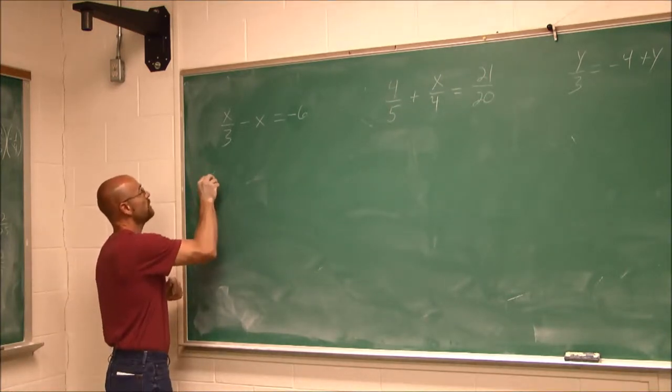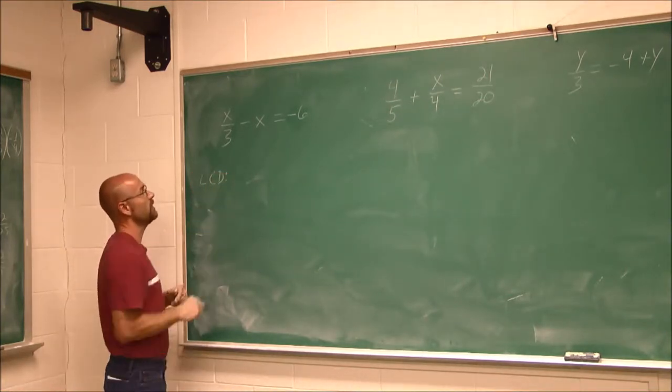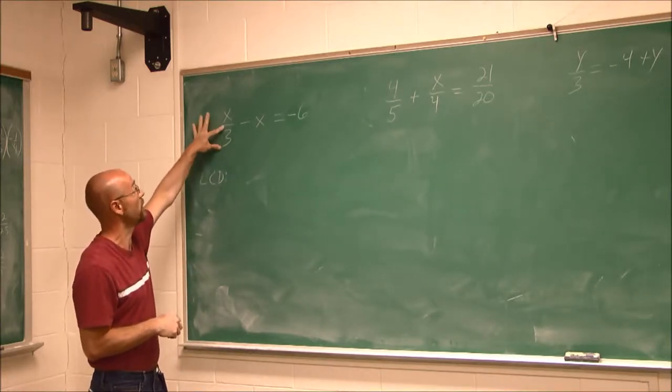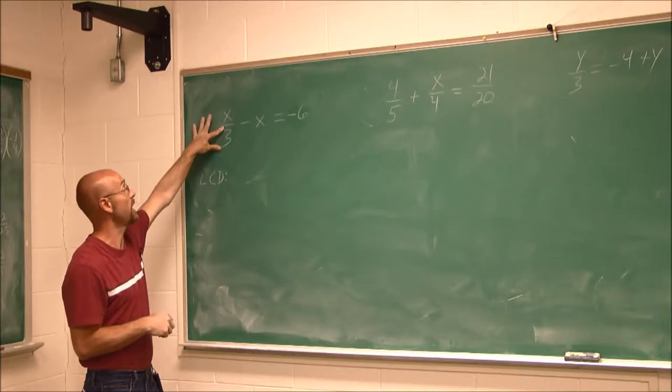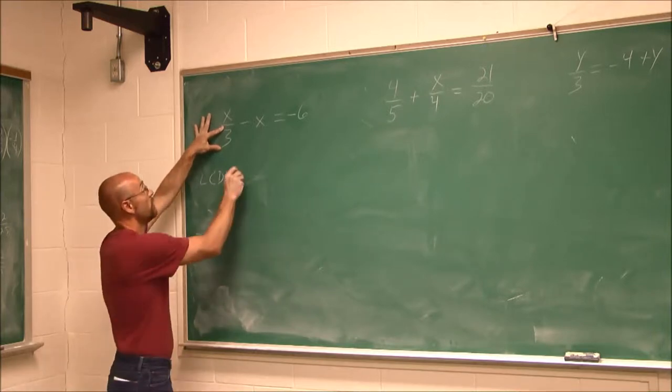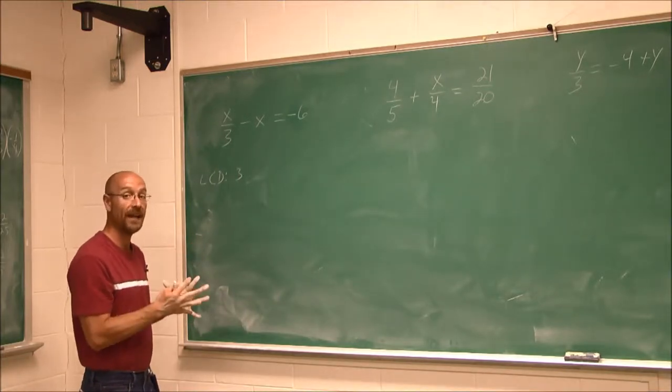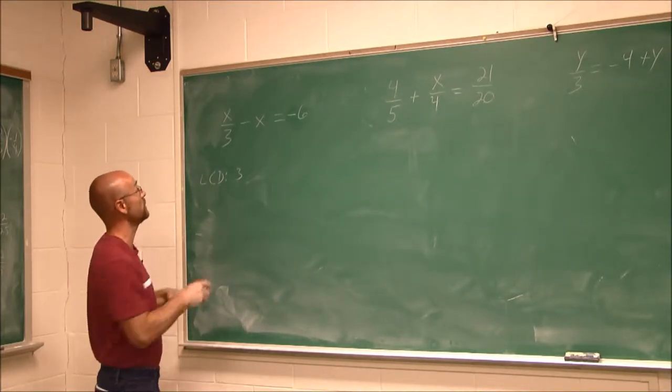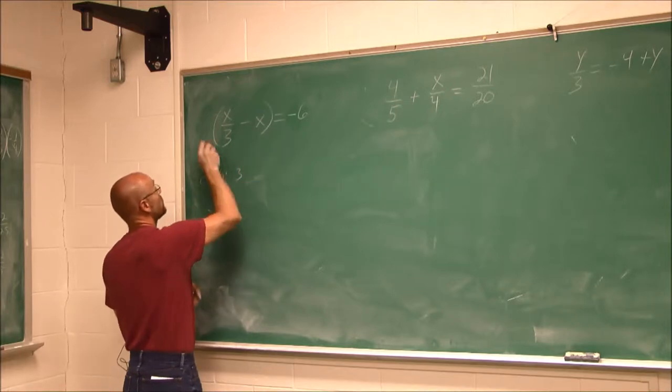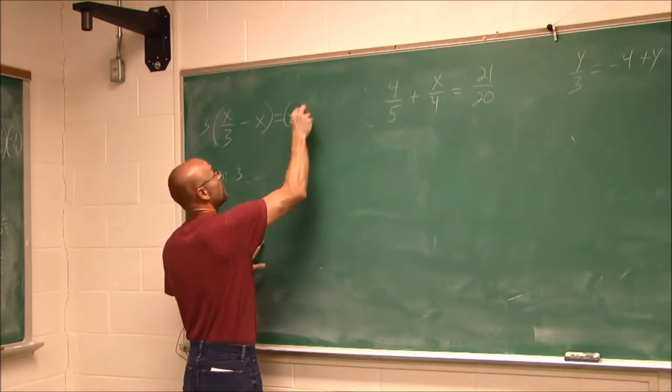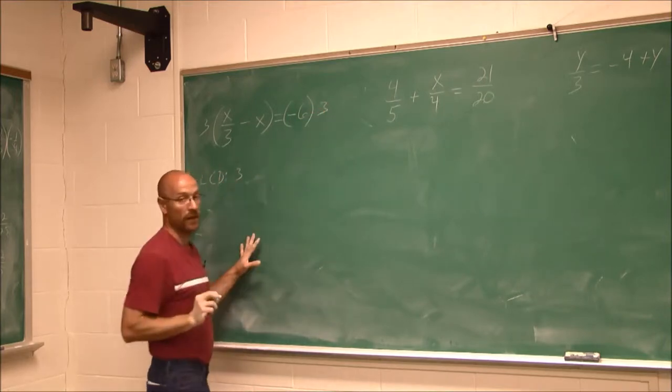So the first thing, step one, is find the LCD. I only have one fraction in this case, and so my denominator is 3. If that's the only denominator, 3 is my LCD. So what I'm going to do is I'm going to multiply both sides of the equation by the LCD. So we found the LCD. Now I'm going to multiply both sides by that LCD.